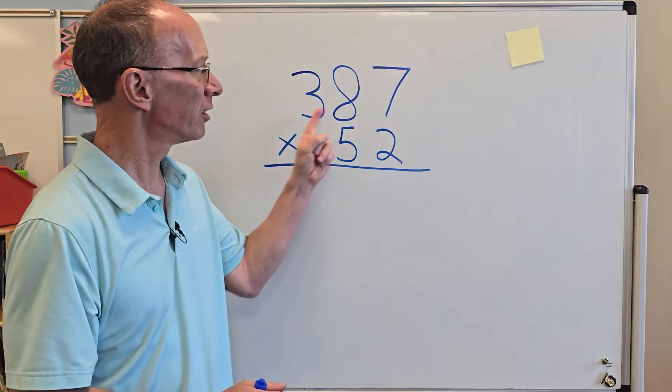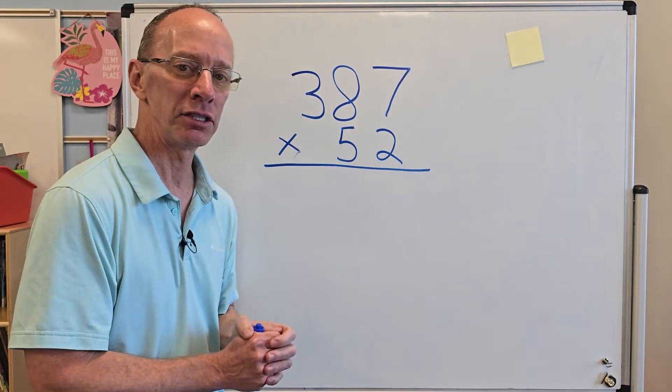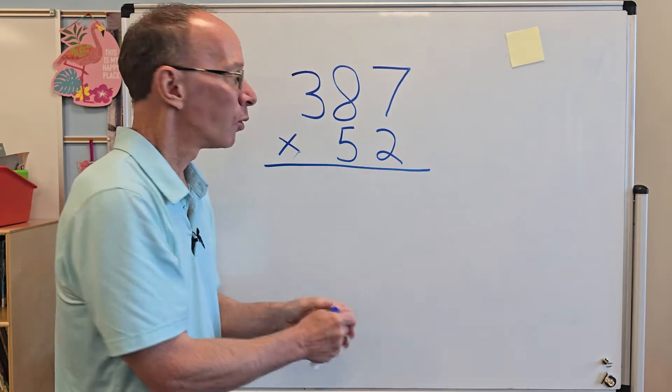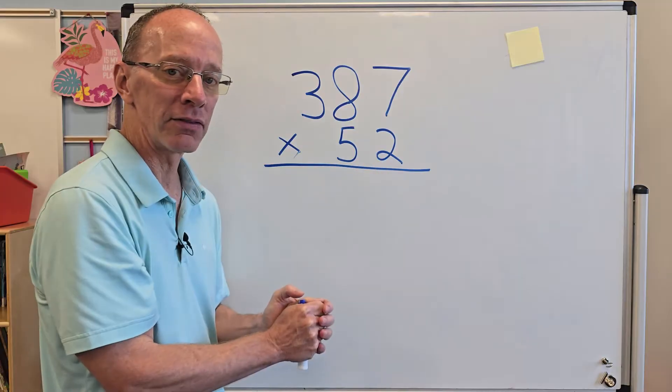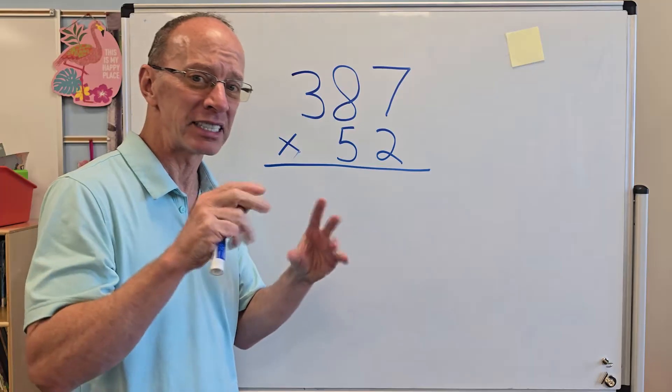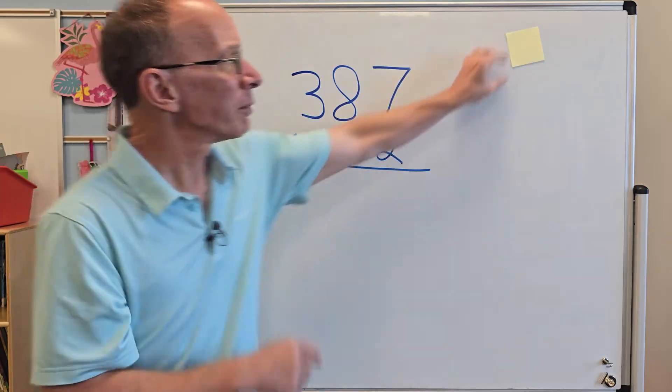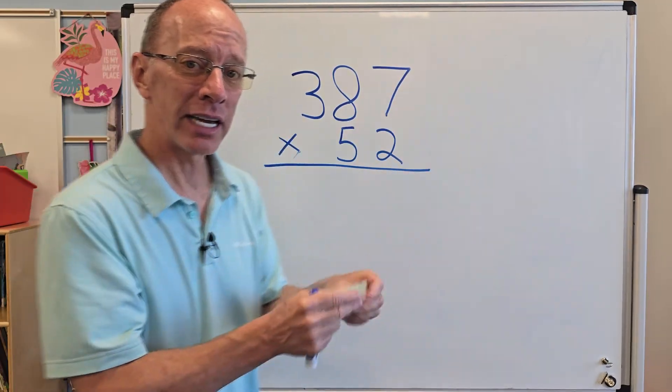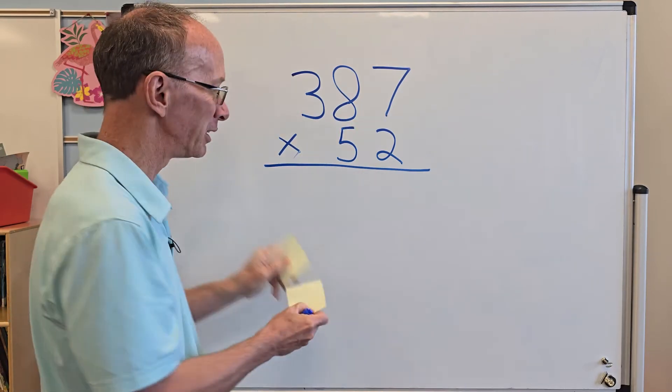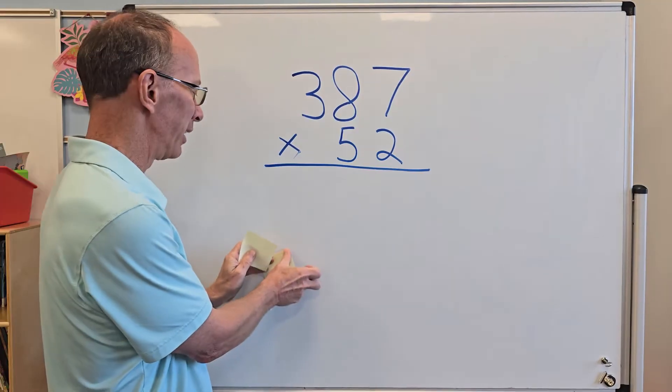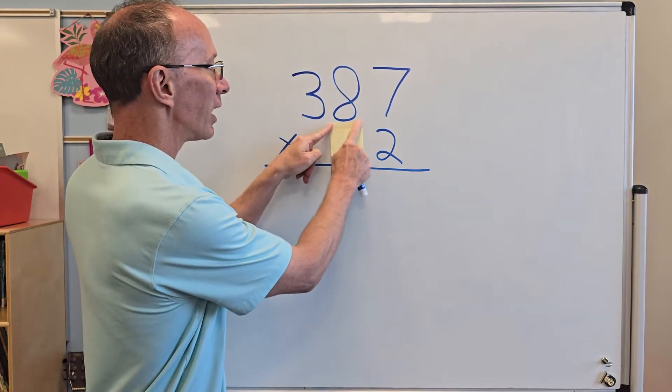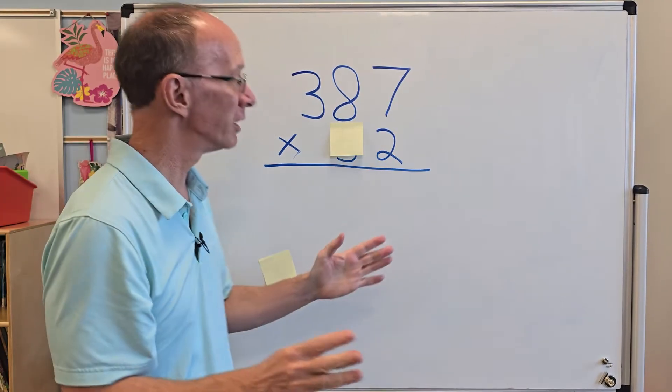So I have 387 times 52. When we do multiplication like this with a double digit number, we're only going to be working with the two at first. That five can get in the way, gets a little nervous, gets a little scary, like a big hairy spider. So what I'm going to do is I'm going to take a sticky note. And if you don't have sticky notes, you can always cover it up with your hand or a piece of paper. I'm just going to cover that up right there. And now it's not that scary.